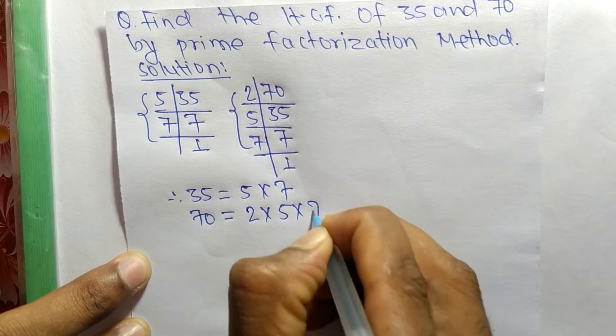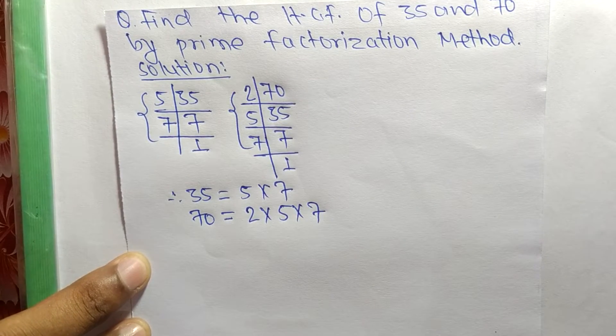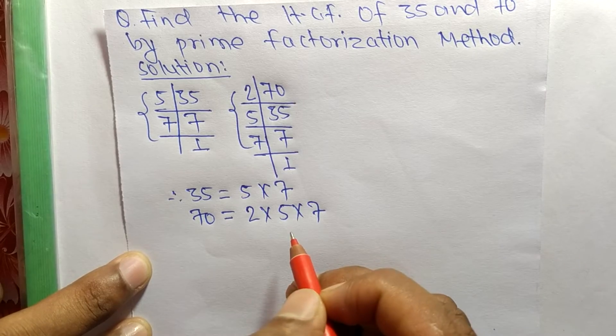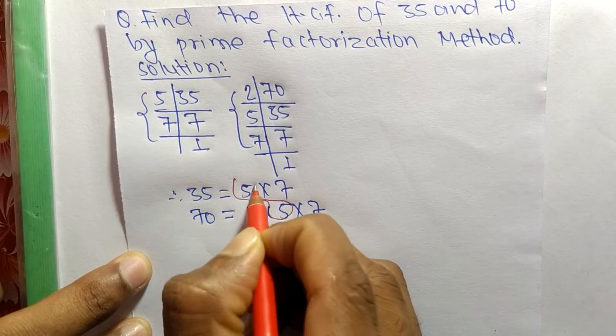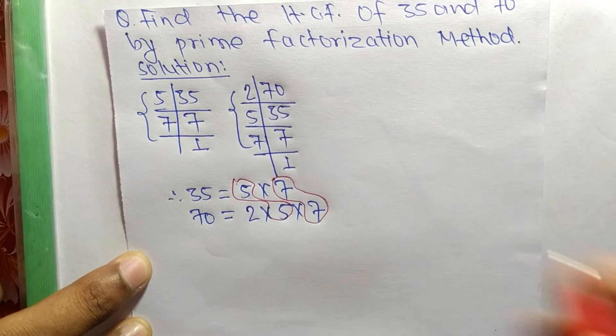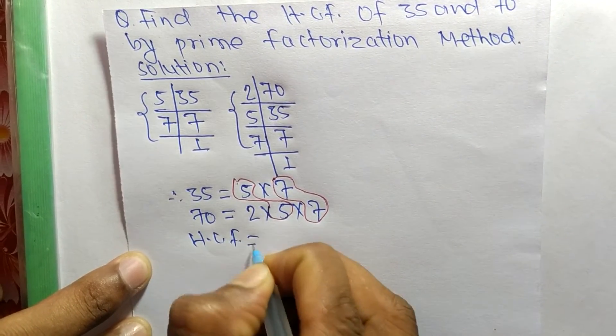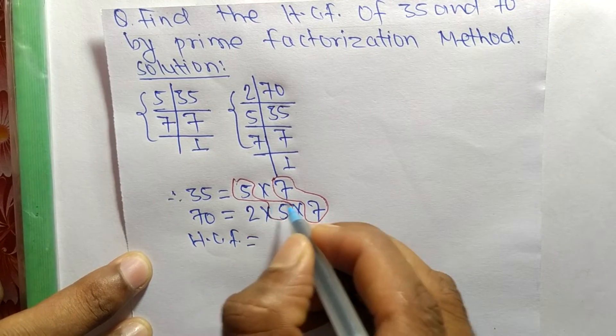Now we have to find out the common factors in these prime factors. The common factor here is 5 and the second one is 7. So HCF is equal to the product of these prime factors, that is 5 times 7.